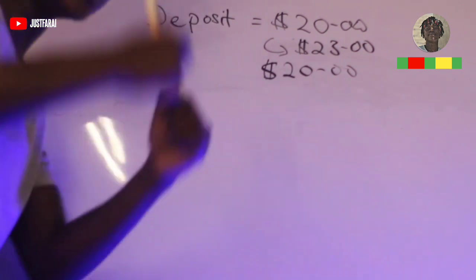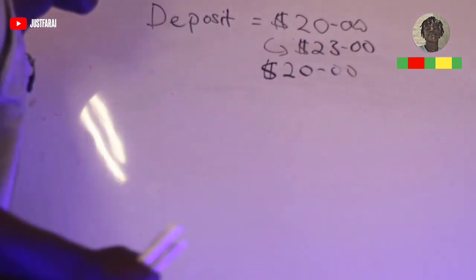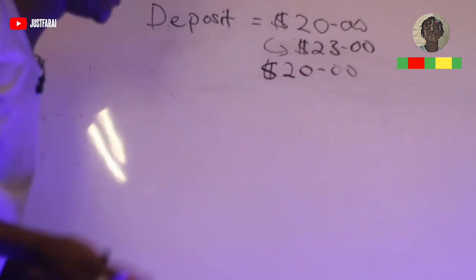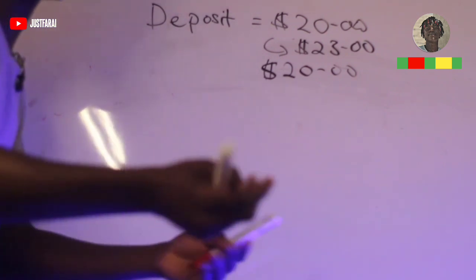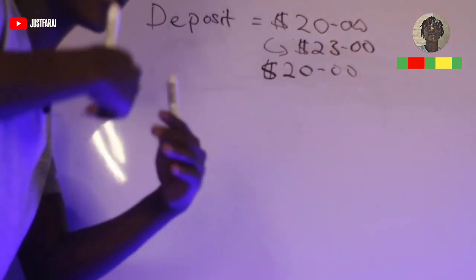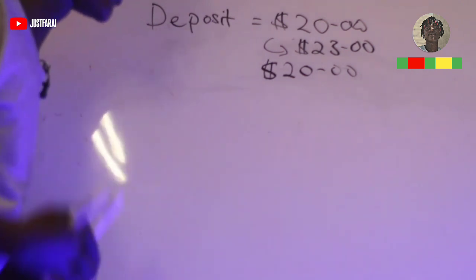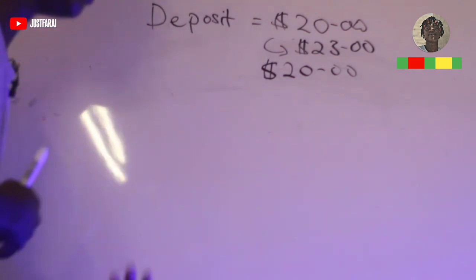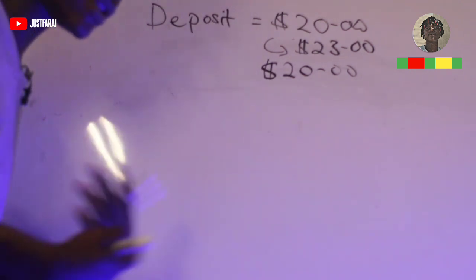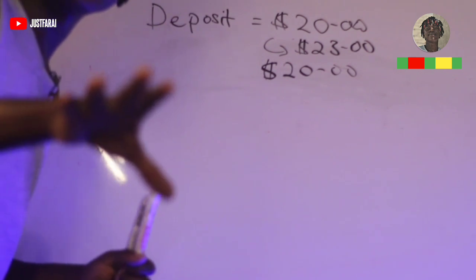What you need to do with that first profit — those three bucks — is withdraw it and spend it on something, maybe beer or chips. This withdrawal will give you a motivational push, like 'yeah, I can do this, I've already withdrawn real money.'